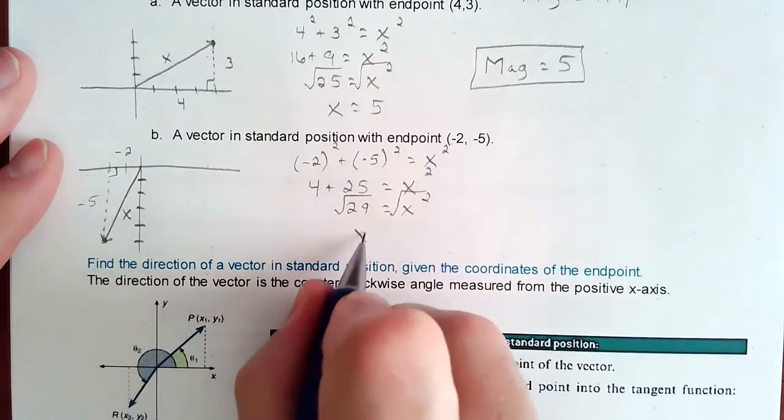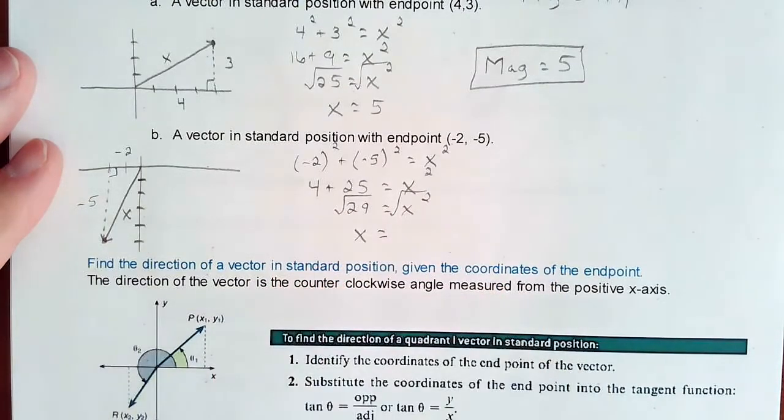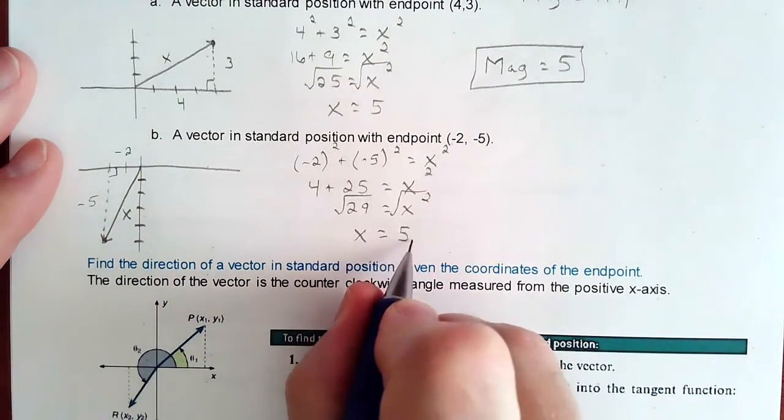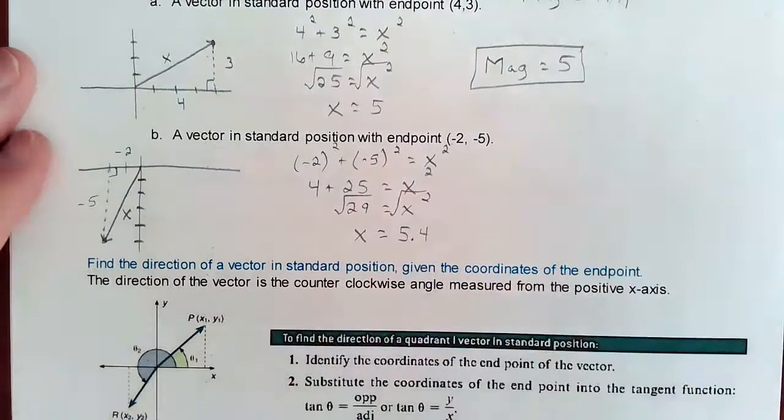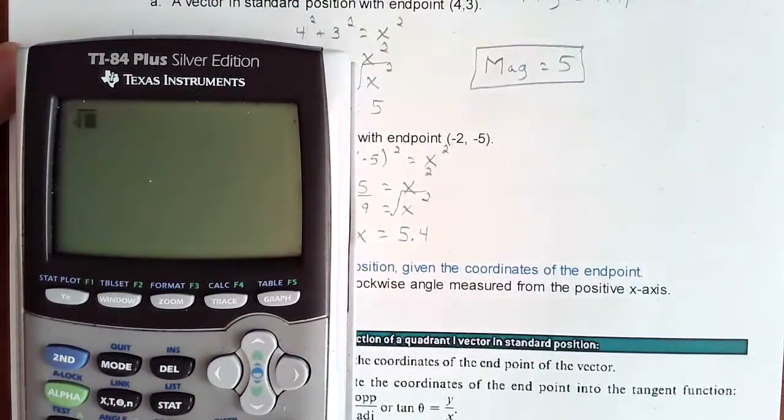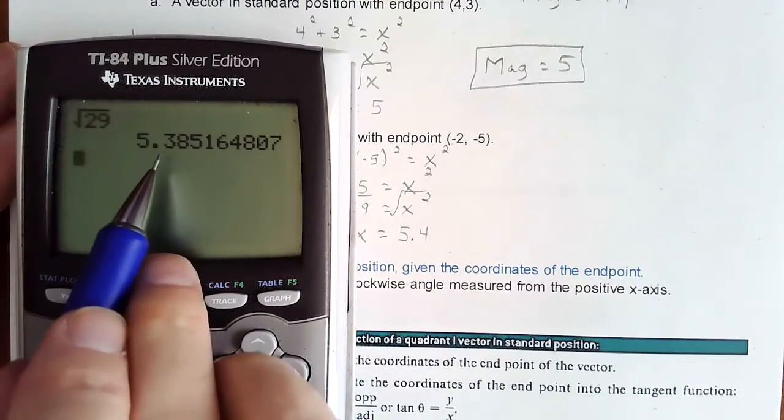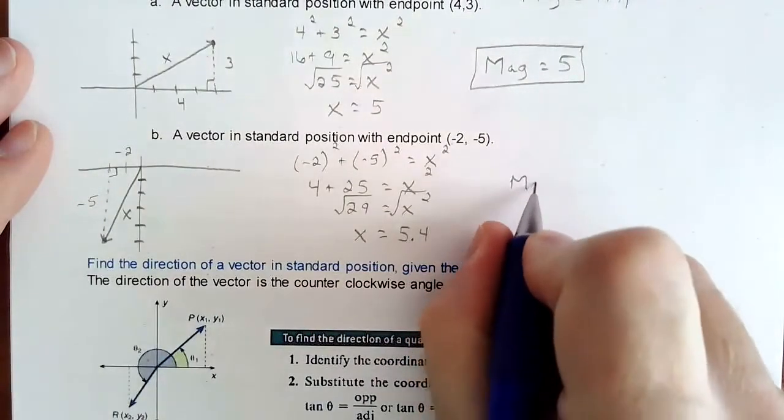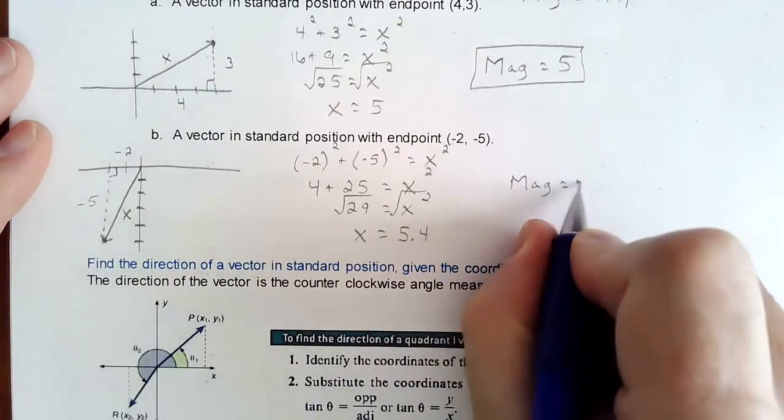So that adds up to 29 equals x squared, square root both sides. And so if you throw that into a calculator, you're going to get a decimal of 5 and a whole bunch of decimals. And if we round it, we'll round it to one decimal place. So square root 29 is going to get us 5.4. So our magnitude equals 5.4.